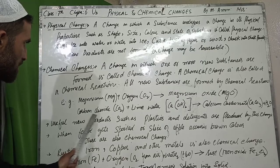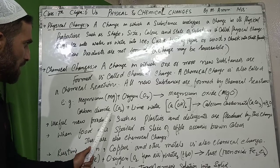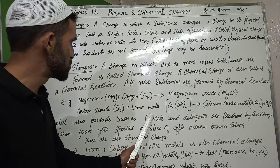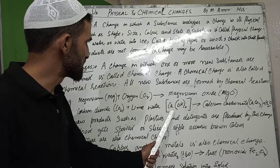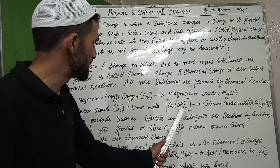Carbon dioxide reacts with calcium hydroxide. When carbon dioxide is passed through calcium hydroxide solution, the product formed is calcium carbonate (CaCO3), and this reaction occurs when oxygen is present.